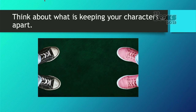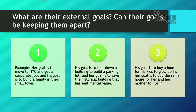I want you to think about what is keeping your characters apart. What are their external goals — can their goals be keeping them apart? For example: her goal is to move to New York City and get a corporate job, his goal is to build a family in their small town. Or his goal is to tear down a building and build a parking lot, her goal is to save that historic building because it has sentimental value to her. Or his goal is to buy a house for his kids to grow up in, and her goal is to buy that exact same house for her and her mother to live in — so that creates opposition.